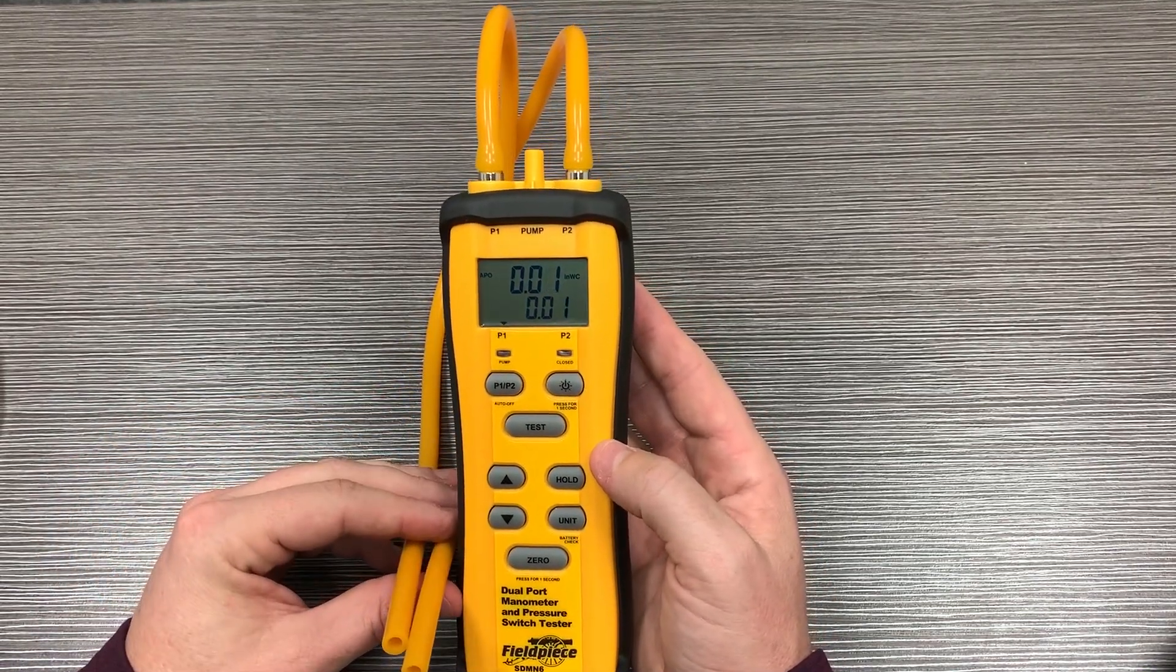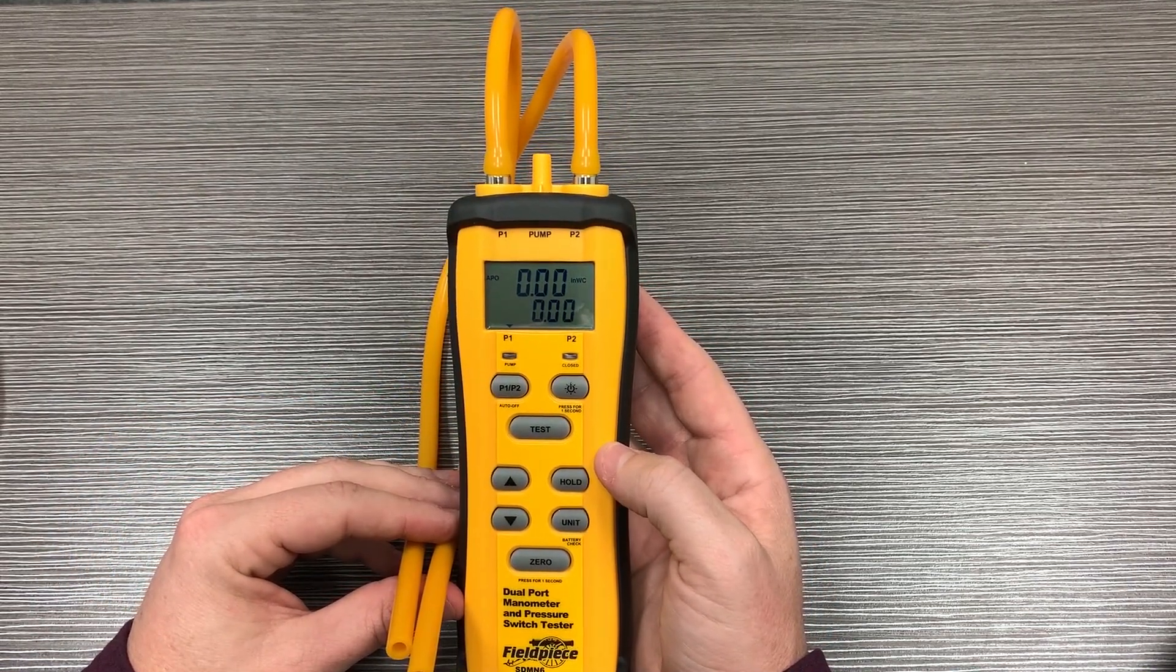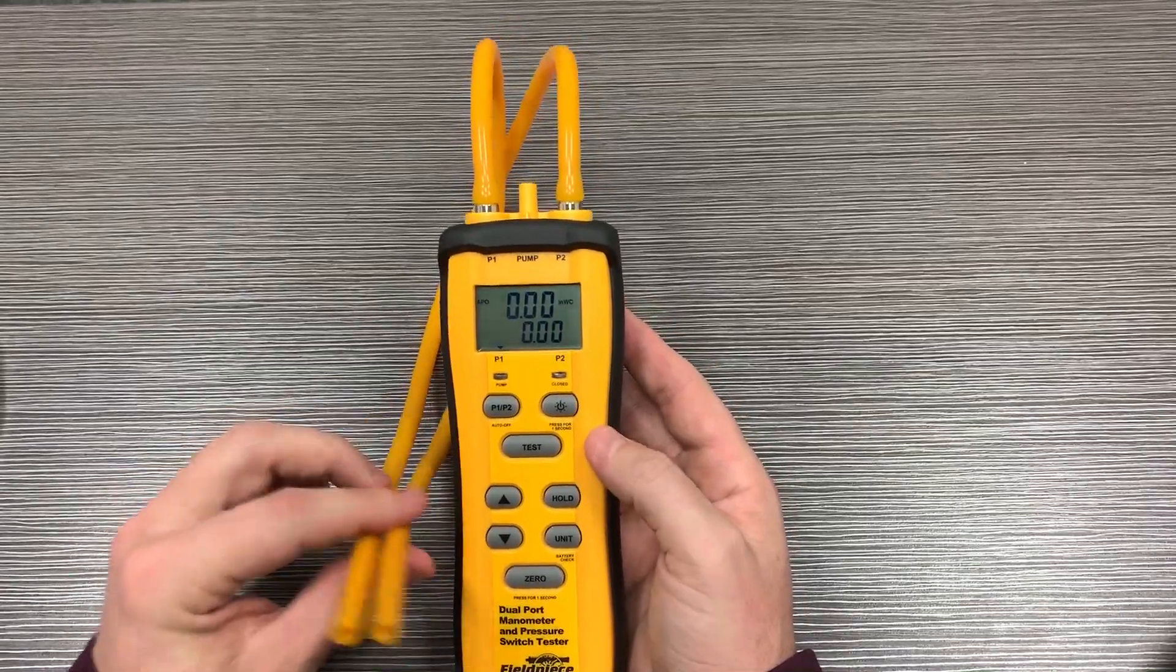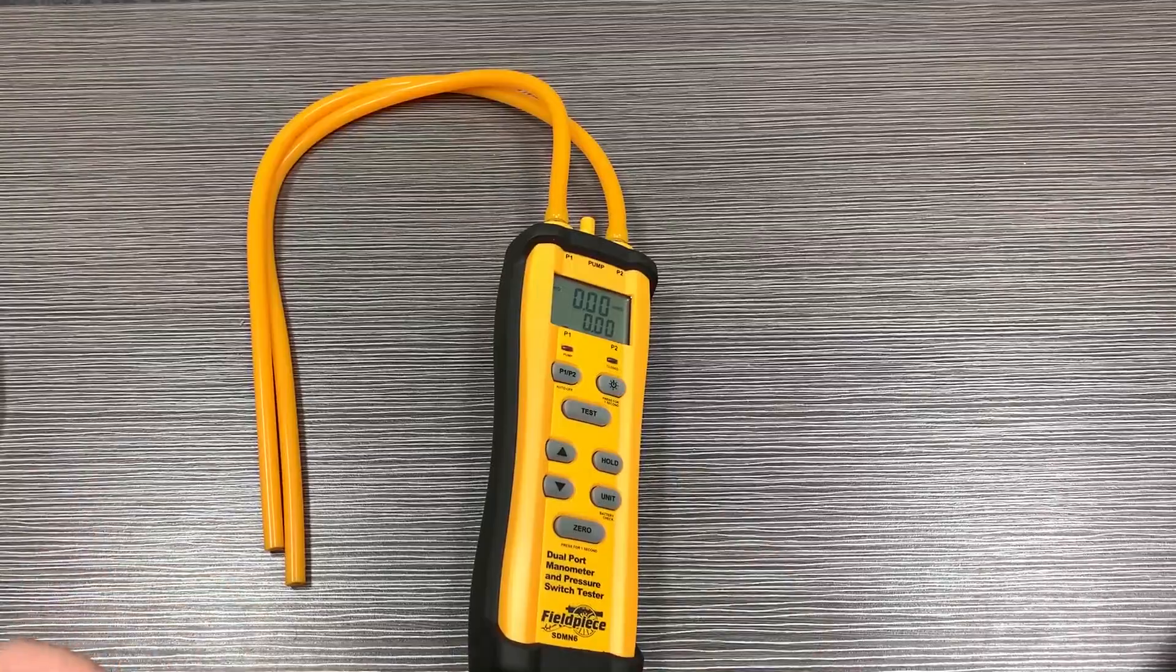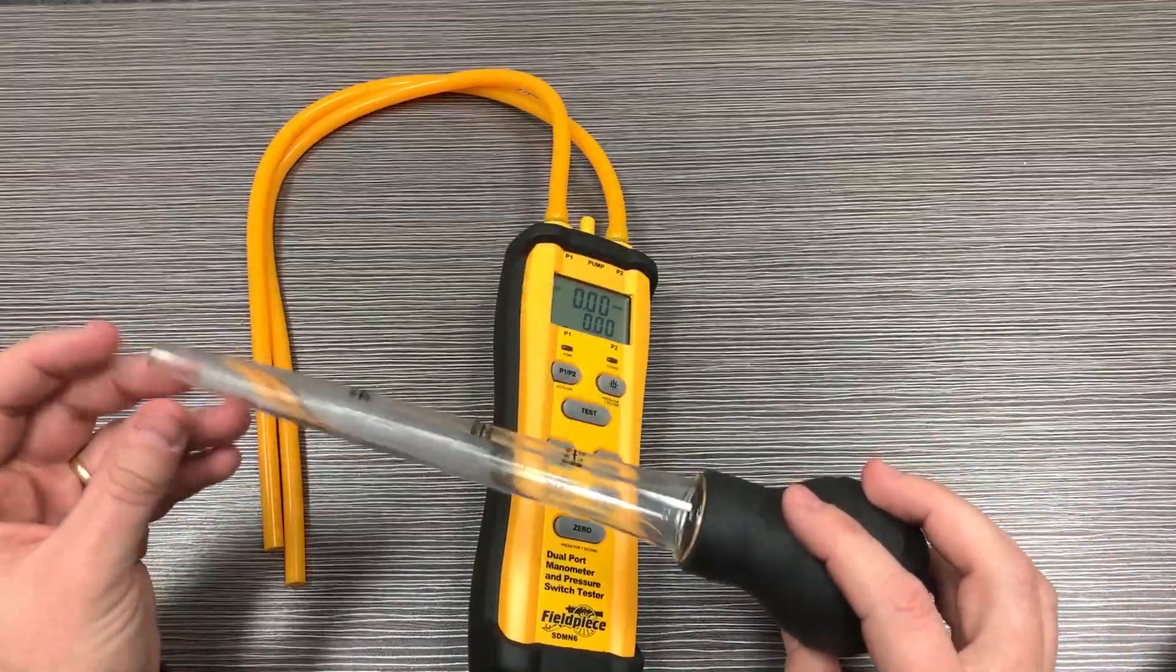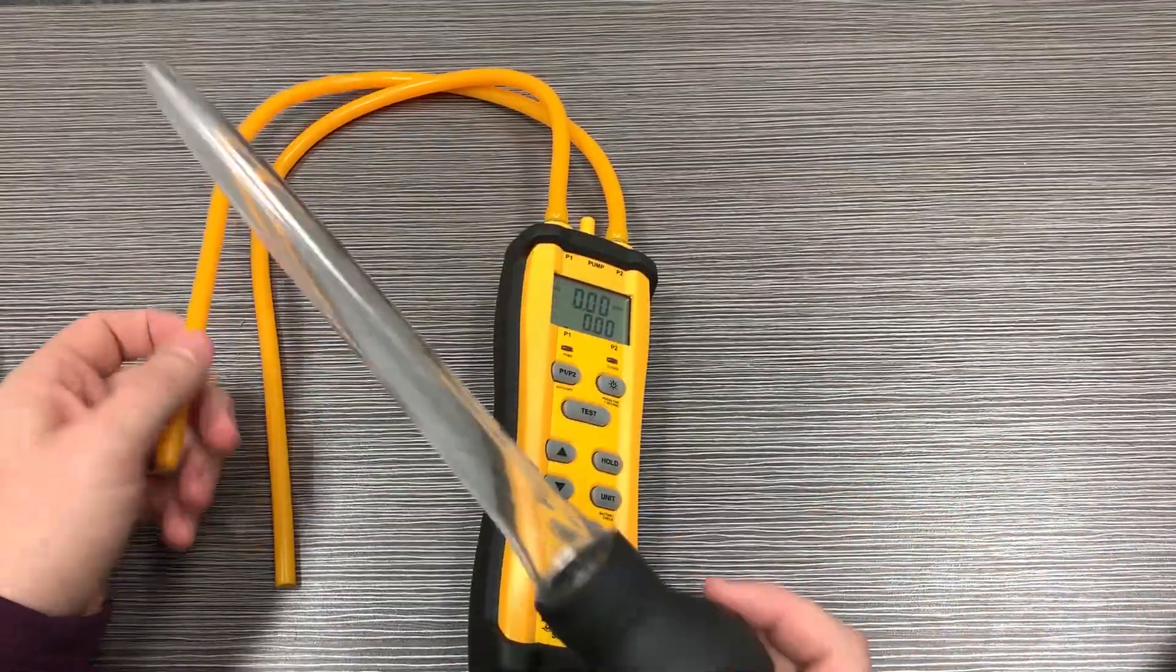Right now you can see they are the same, and that's because those two things are exactly the same because they're referenced to atmosphere. But let's go ahead and take a turkey baster, which I actually use quite a bit for cleaning out float switches on drain lines—it's a nice little tool for that.